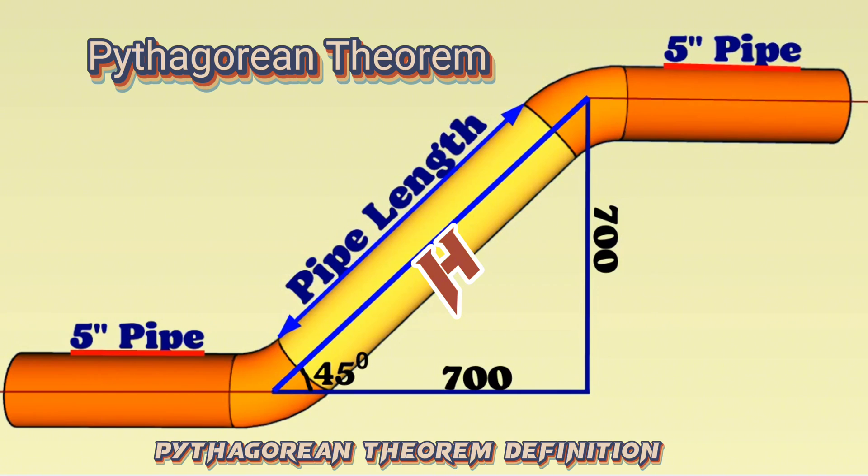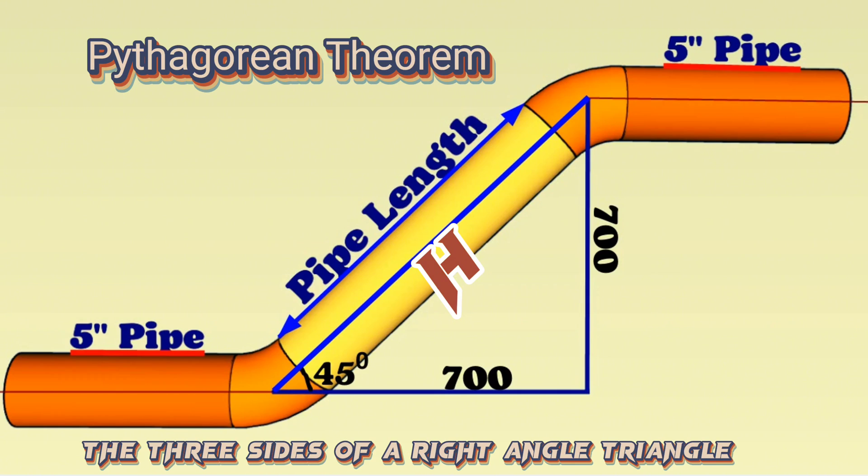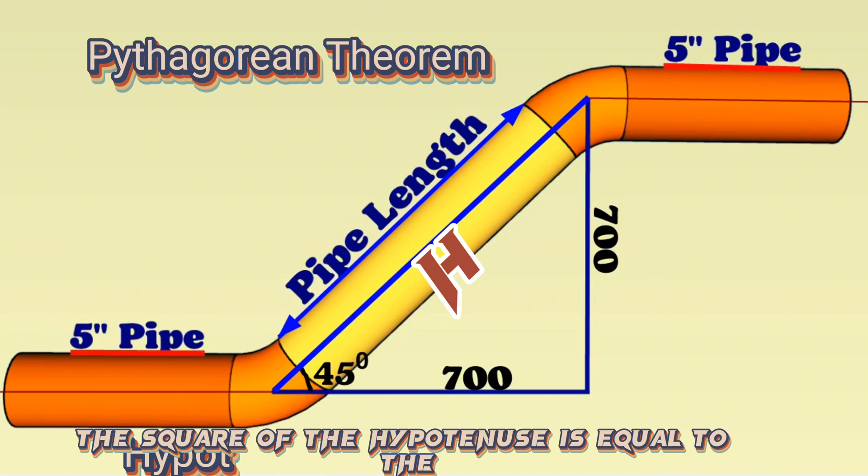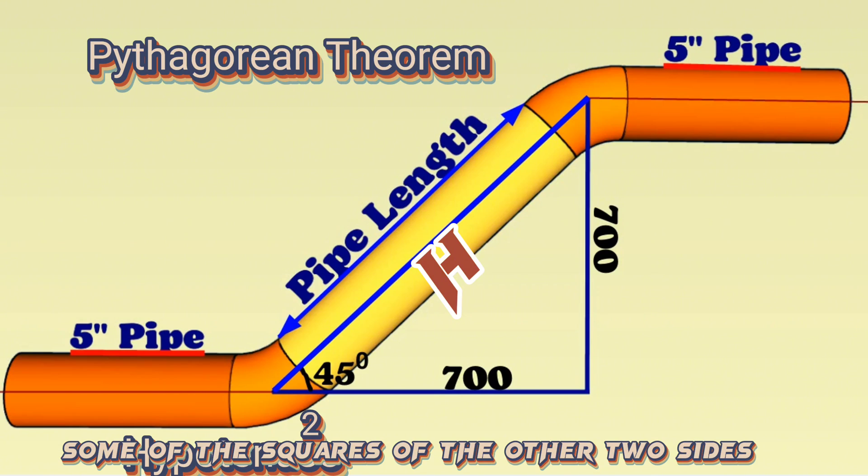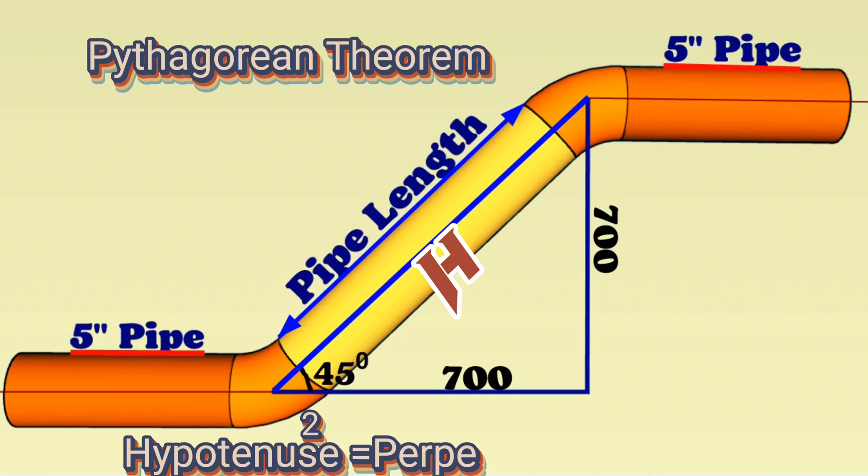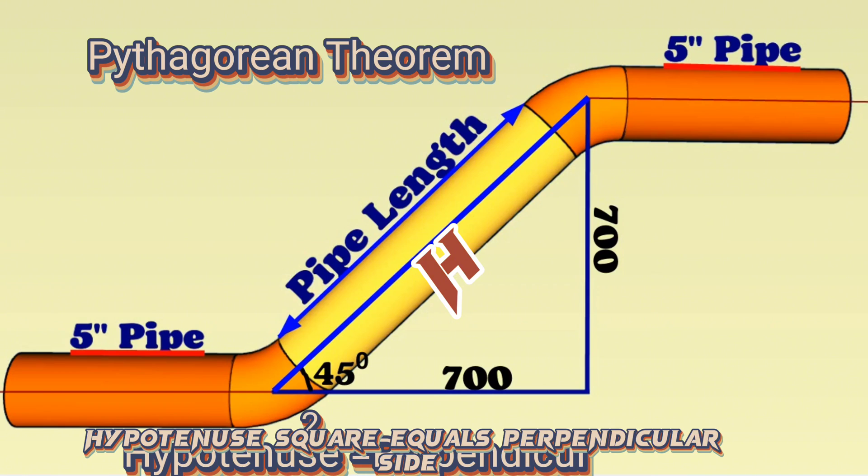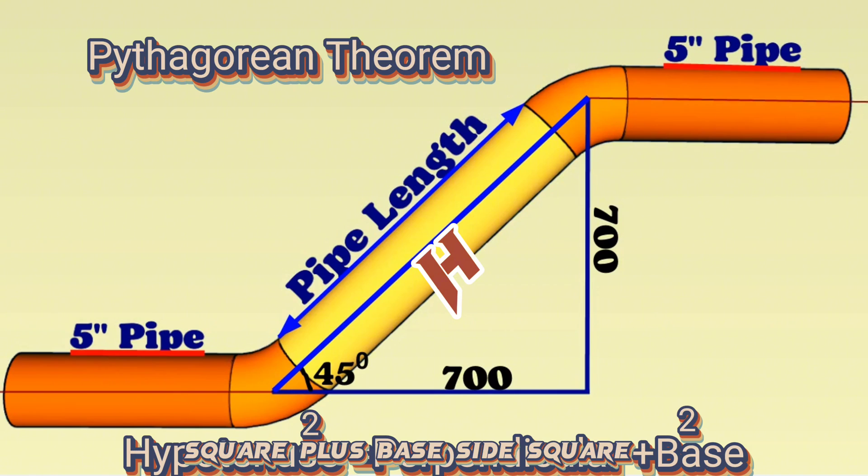Pythagorean theorem definition shows the relationship between the three sides of a right-angle triangle. The square of the hypotenuse is equal to the sum of the squares of the other two sides. Hypotenuse squared equals perpendicular side squared plus base side squared.